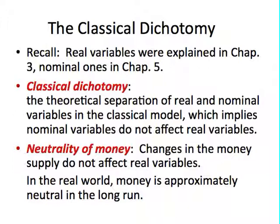A related concept is the neutrality of money: changes in the money supply do not affect real variables. In the real world, money is approximately neutral in the long run, but in the short run, changes in money supply can affect output growth. That finishes our chapter five. We'll move on to unemployment, which is chapter seven, on Monday, and I hope to finish that chapter this week. Thank you for watching this video.